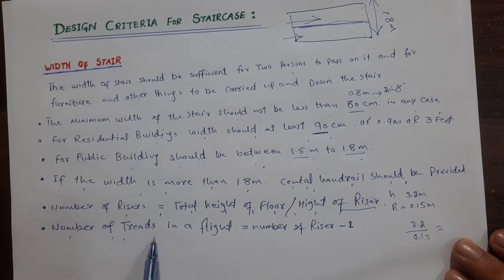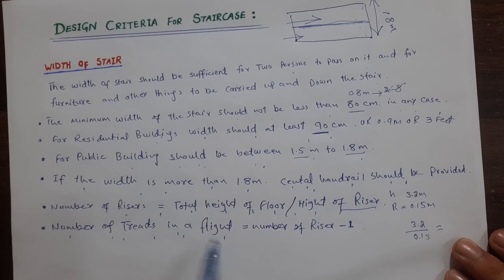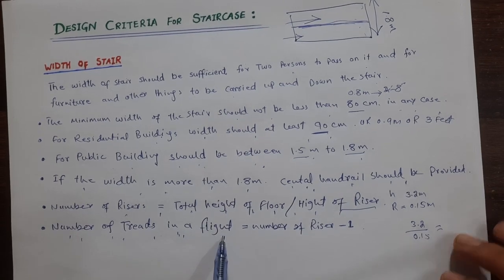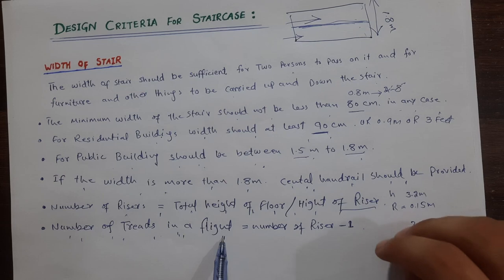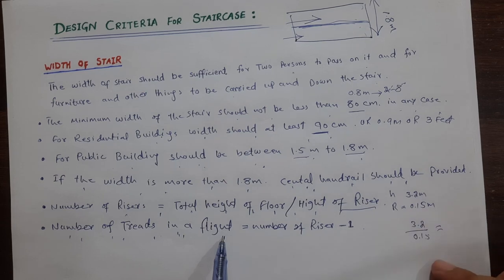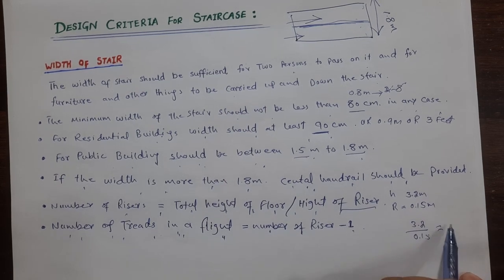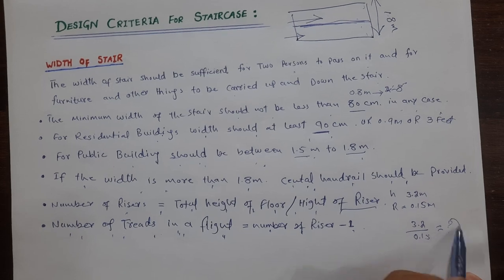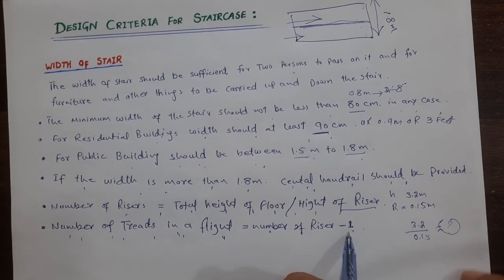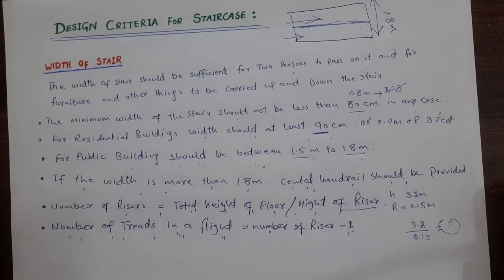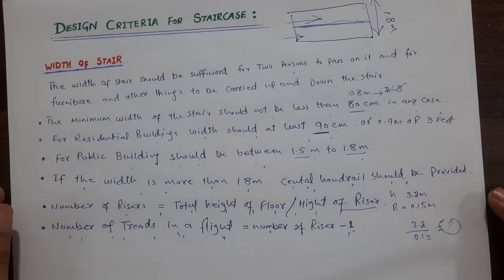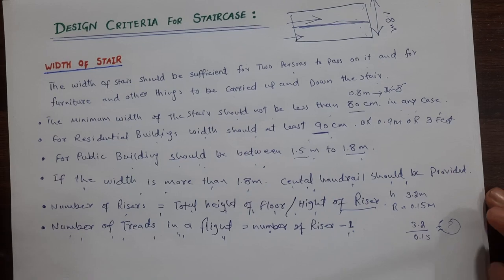The next one is the number of treads in a flight. To find the number of treads in a flight, take the number of risers and subtract 1. That gives you the number of treads.